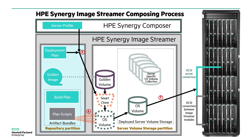Going back to our process diagram, number five shows when the server profile is created, a temporary smart clone thin replication of the golden volume is created. Then per number six, plan script personalization is applied using the attributes defined in the server profile deployment plan. A temporary OS volume is created for your specified server that is moved to the deployed server volume storage area of the ImageStreamer when personalization is complete. Number seven shows an iSCSI connection is added for the specified server. Your server is now ready to use.